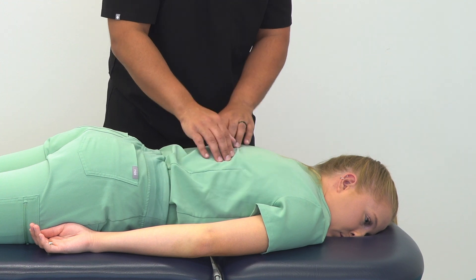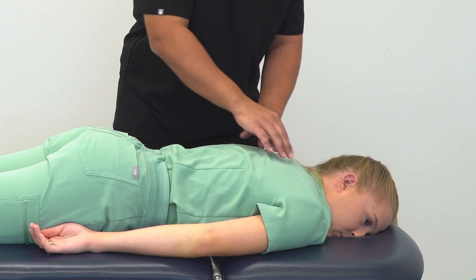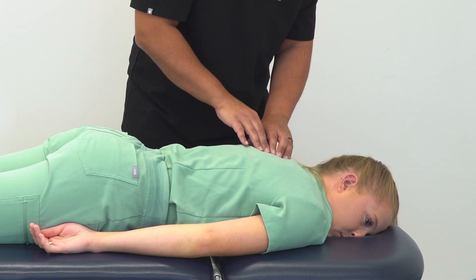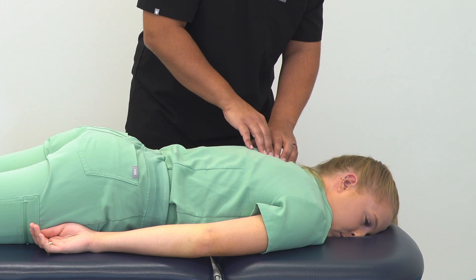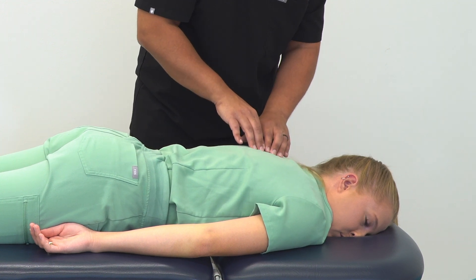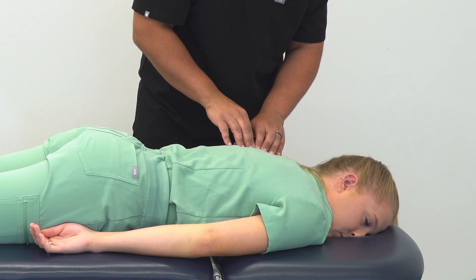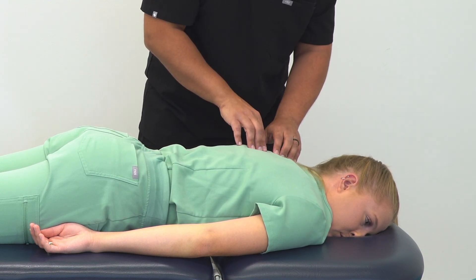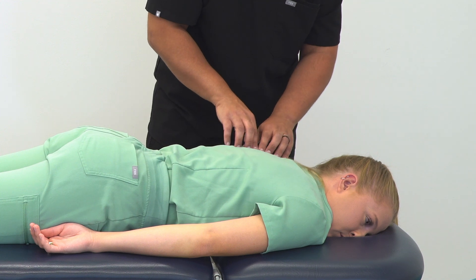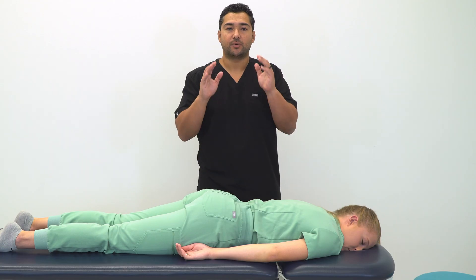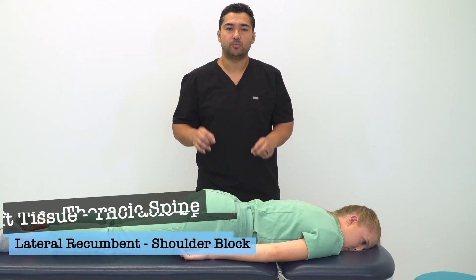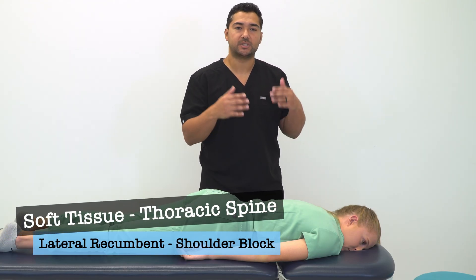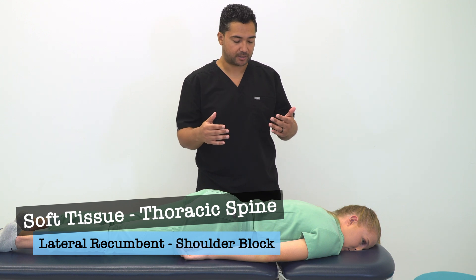That right side does feel significantly better. There is still a little bit of soft tissue tension on this left side just medial to the scapula. So for our next example, we're going to be treating the upper thoracics using a shoulder block.